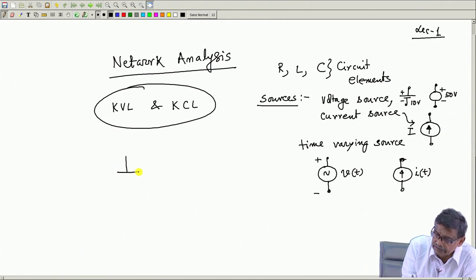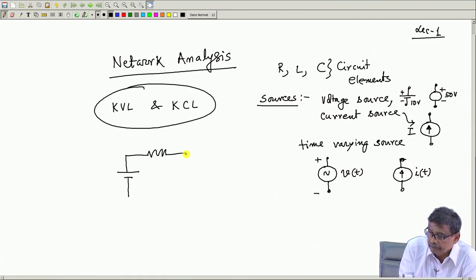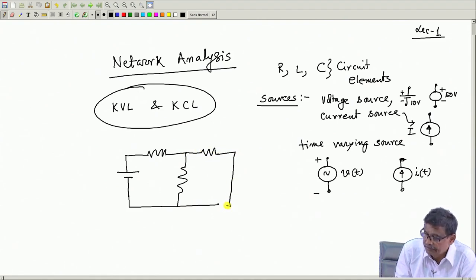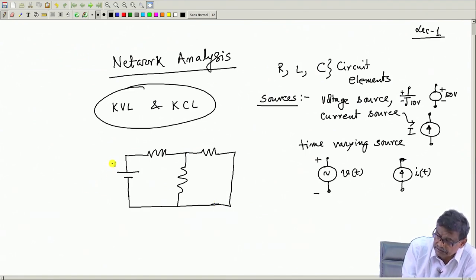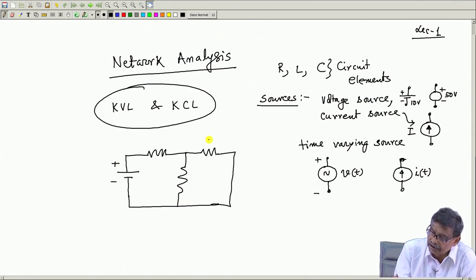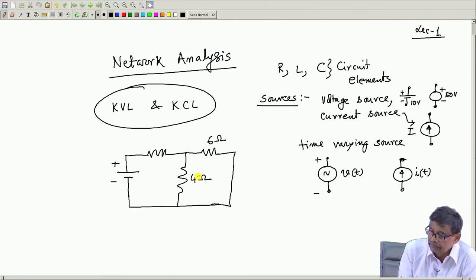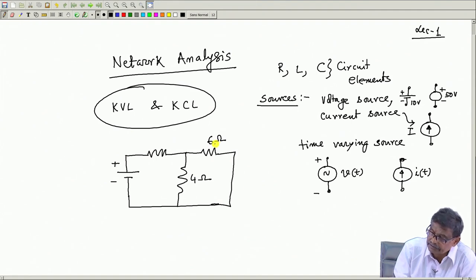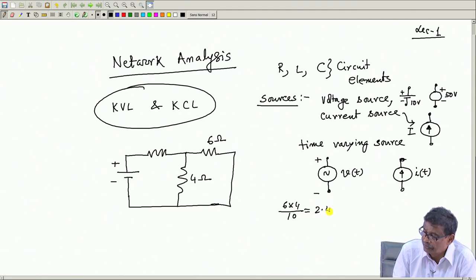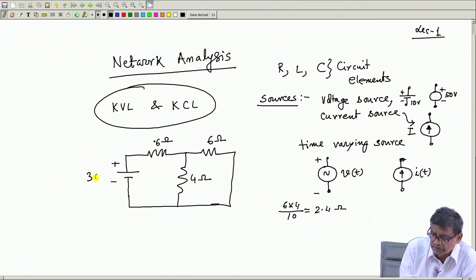For example, suppose you have a simple DC circuit with a 30-volt source, a 0.6 ohm series resistance, and two parallel resistances of 6 ohm and 4 ohm. The equivalent resistance of 6 ohm and 4 ohm in parallel is 6×4/10 = 2.4 ohm. So the total resistance is 2.4 + 0.6 = 3 ohm, and the total current is 10 ampere.